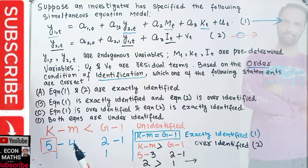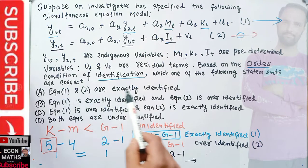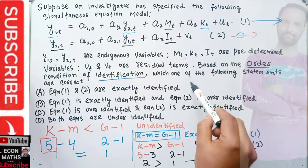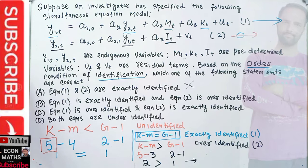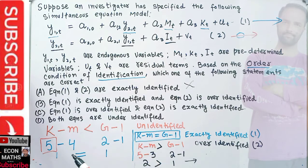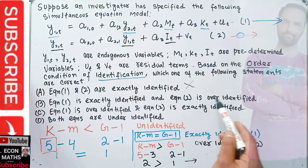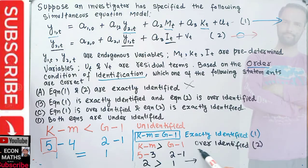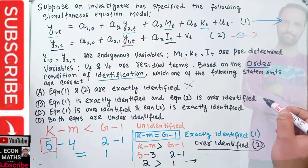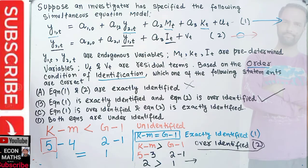Looking at the answer options: the option stating that equation one is exactly identified and equation two is over-identified should be correct. Equation one gives k minus m equal to g minus 1, confirming it is exactly identified, and equation two is over-identified.